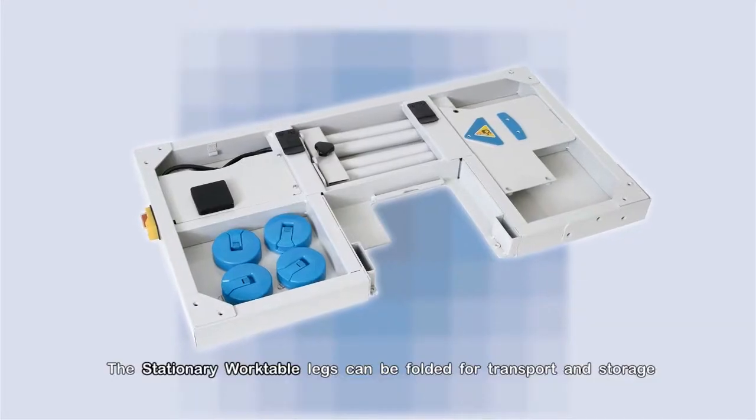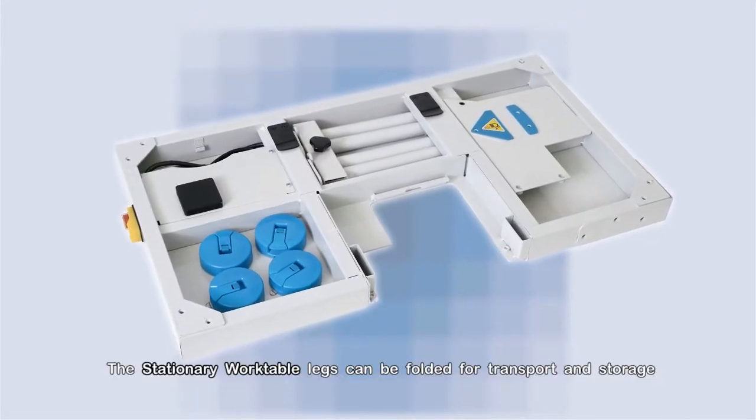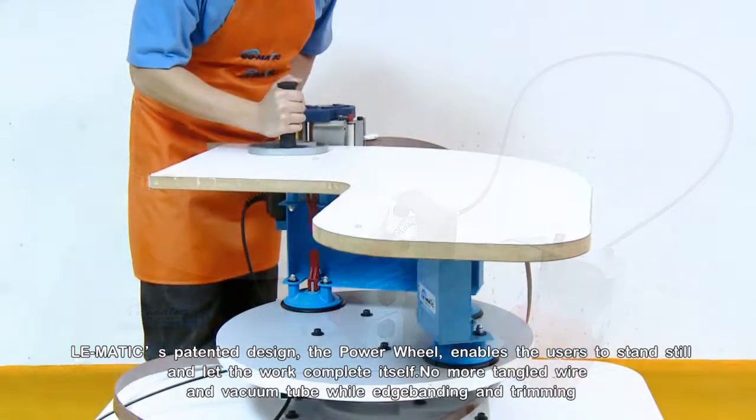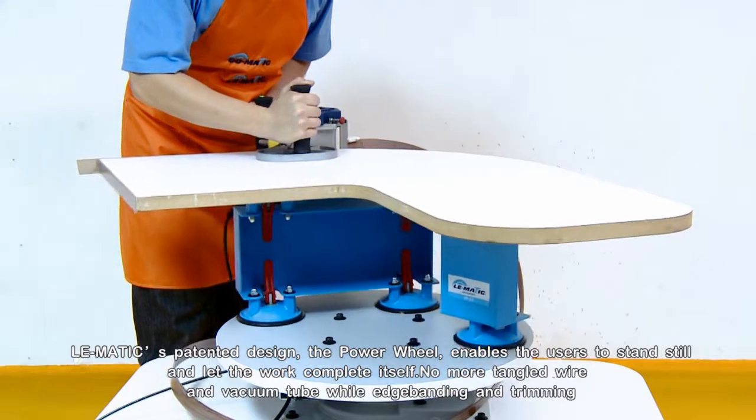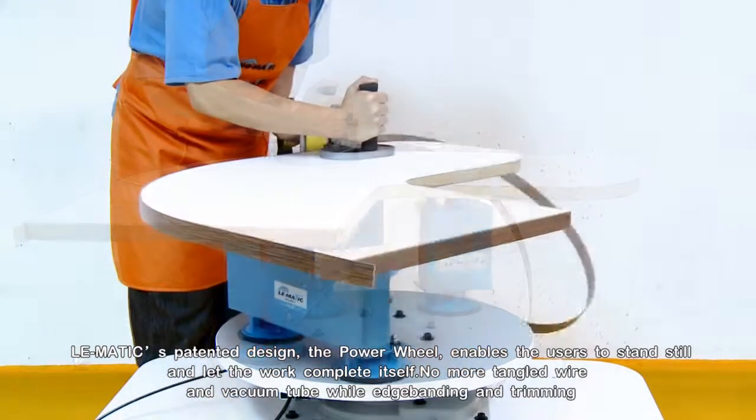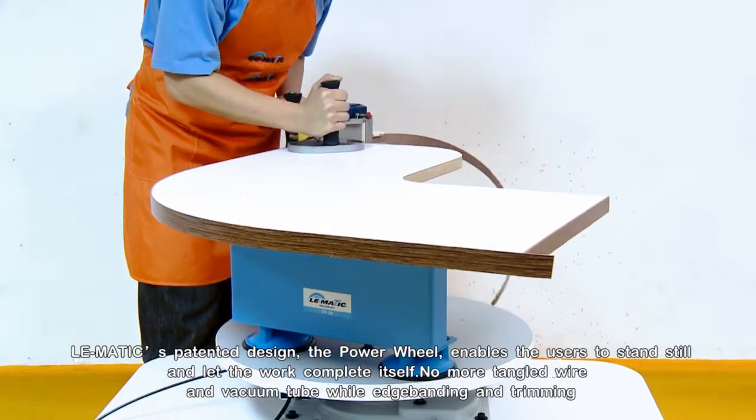The stationary work table legs can be folded for transport and storage. Lomatic's patented design, the power wheel, enables the user to stand still and let the work complete itself. No more tangled wires and vacuum tubes while edge banding and trimming.